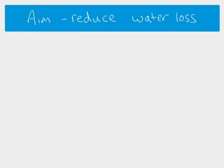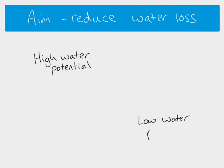If we're talking about water loss, most of these adaptations are going to be to do with water potential. We know that if you've got an area of higher water potential and an area of lower water potential, water is going to move down the water potential gradient from high to low water potential.